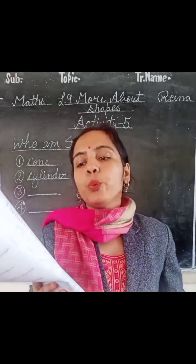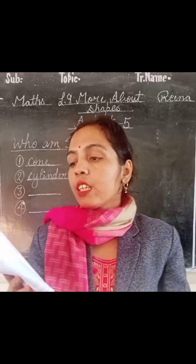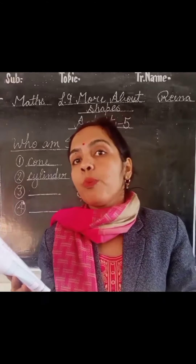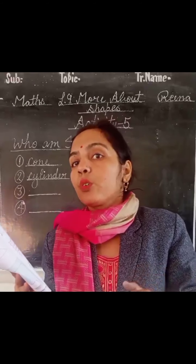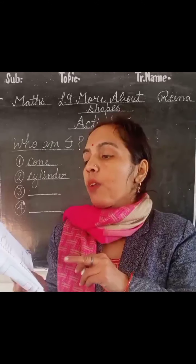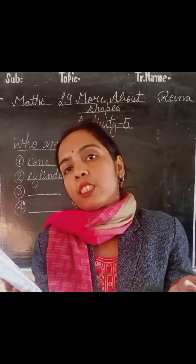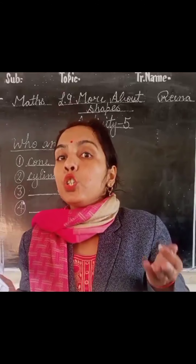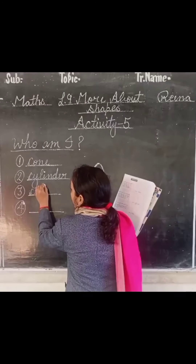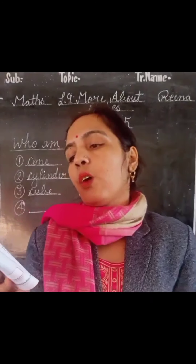In the third question: I have six flat faces, 12 edges, and 8 vertices. Both the cube and cuboid have six faces, eight corners, and twelve edges. But the condition here is that all my edges are of the same length — so the answer is a cube, not a cuboid.